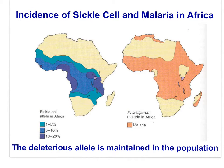Interestingly, the sickle cell allele is deleterious and causes harm to individuals who are homozygous sickle cell. Many of these individuals do not live to reproduce. As a result, we might expect the allele to disappear in the population over time due to negative selection pressure. However, due to the malarial resistance provided in the heterozygous condition, the allele is maintained — if not favored — in locations where there is malaria.